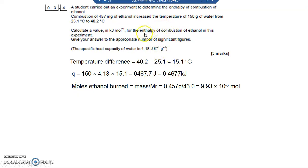It wants kilojoules per mole - the moles of ethanol burned. I've got 457 milligrams. I've got to get that into grams because moles is mass over Mr. 457 milligrams to grams: divide by a thousand, so it's 0.457 grams. The Mr of ethanol is 46. The moles of ethanol burned are 9.93 times 10 to the minus 3.